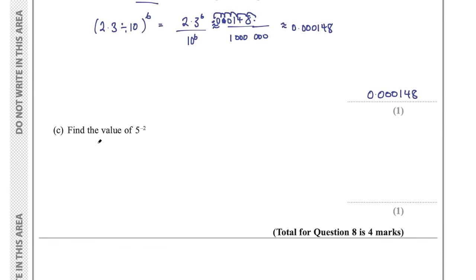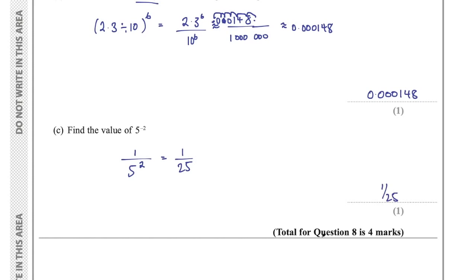Part C says find the value of 5 to the power of negative 2. A negative exponent means 1 over 5 to the power of 2, which is 1 over 25. Final answer: 1 over 25. That was question 8 for a total of 4 marks.